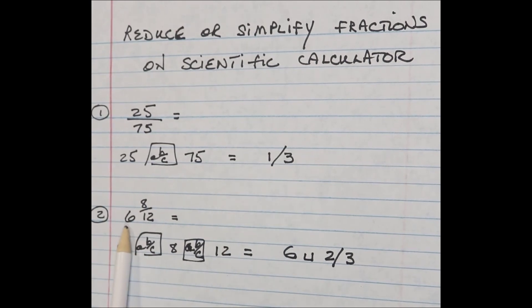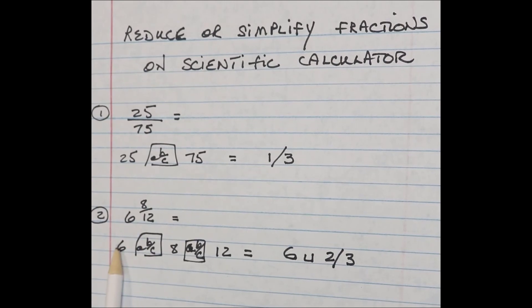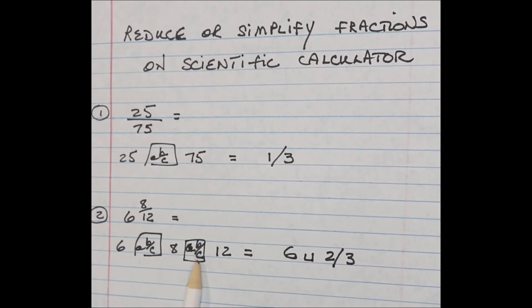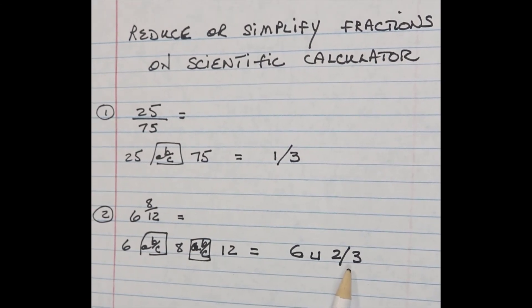And the other one I'm going to type for you is 6, a mixed number 6 and 8/12. And I'm going to type 6, fraction key, 8, fraction key, 12. And you're going to see it displayed as 6 and 2/3 in its reduced form.